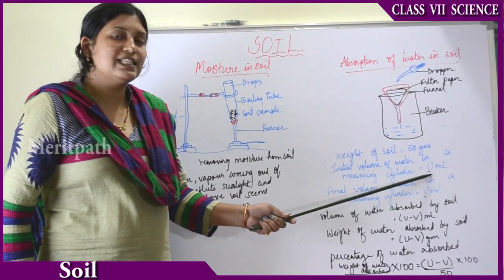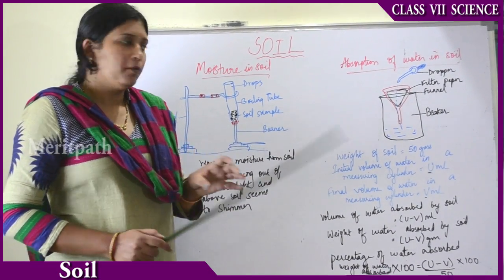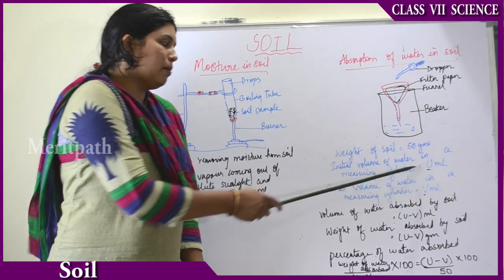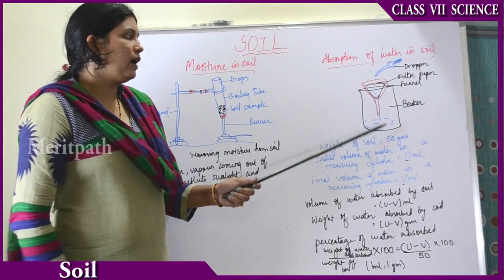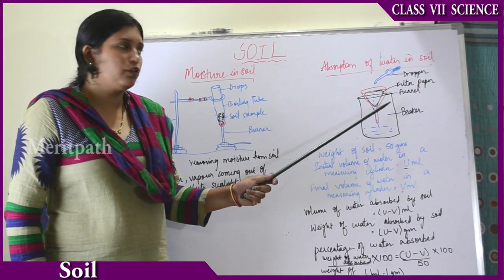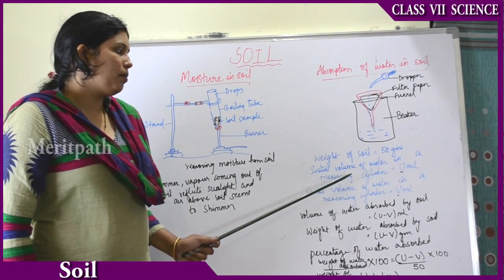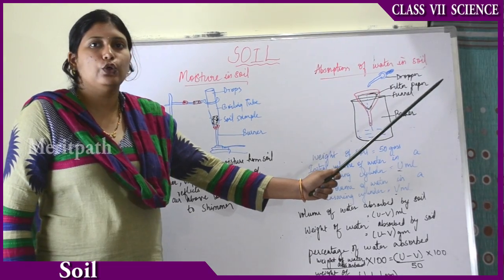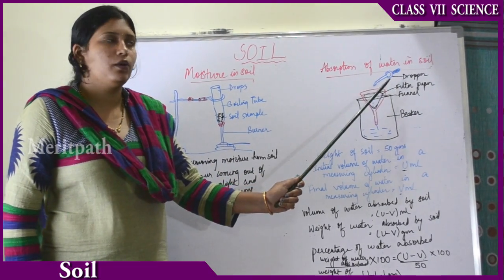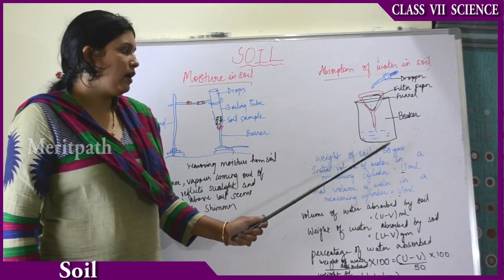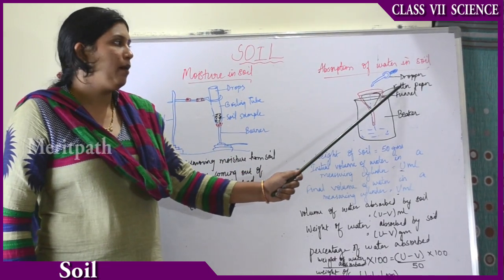Suppose you have taken 50 ml of water initially — that will be considered as U ml. The final volume of water in the measuring cylinder is what we need to determine. The amount of water poured in drop by drop with the help of the dropper is 50 ml, which we call U ml.